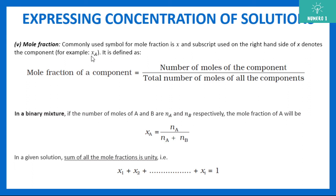Next is mole fraction, which is very important. Mole fraction of a component — denoted as x_A — is the number of moles of that component divided by the total number of moles of all components present. For a binary mixture with components A and B, where the number of moles of A is n_A and of B is n_B, the mole fraction of A is x_A = n_A / (n_A + n_B). An important point: in any given solution, the sum of all mole fractions equals 1 — always equal to unity.